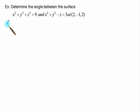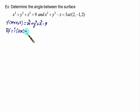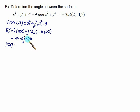To determine the angle between two surfaces, the angle between their normals equals the angle between the surfaces. For the first surface, define F(x,y,z) = x² + y² + z² − 9, so grad F = 2xi + 2yj + 2zk. At the point (2, −1, 2): grad F = 4i − 2j + 4k, and |grad F| = √(16 + 4 + 16) = √36 = 6.